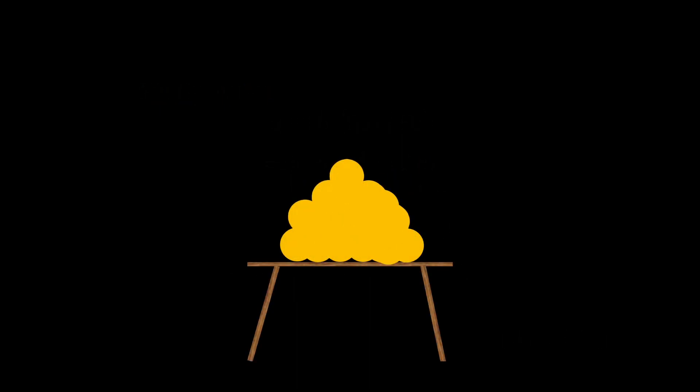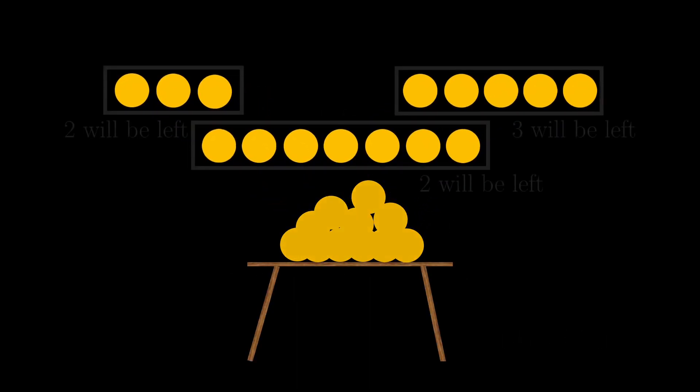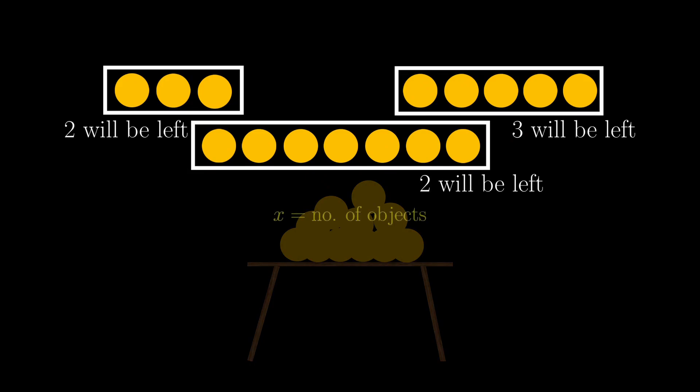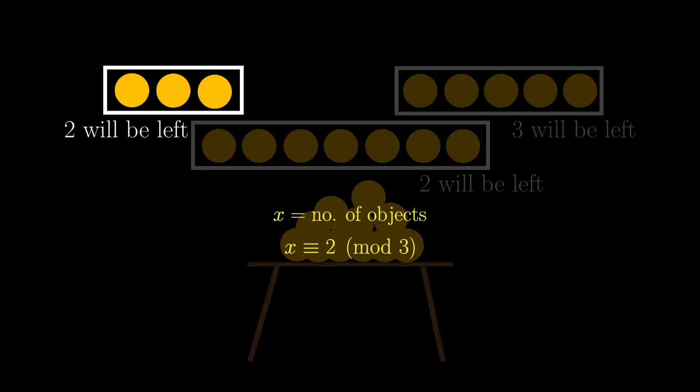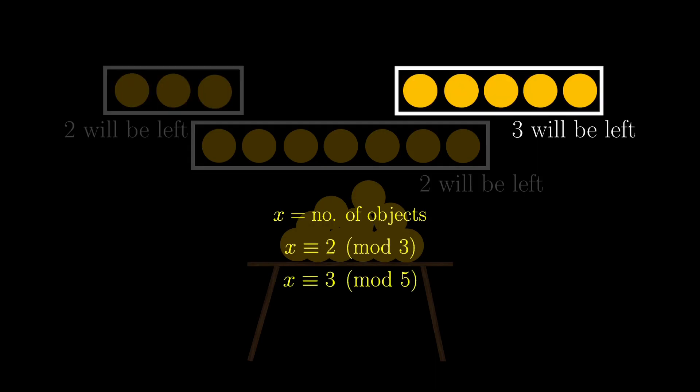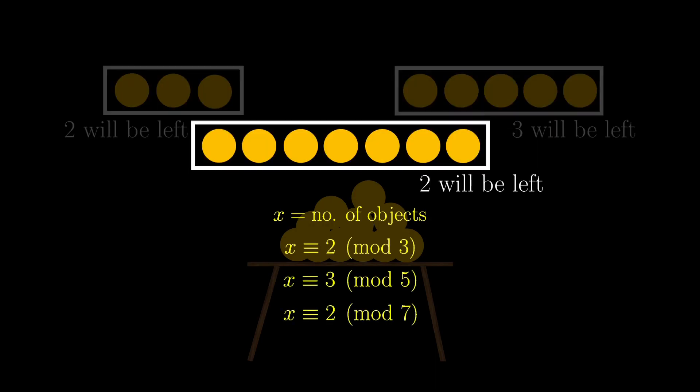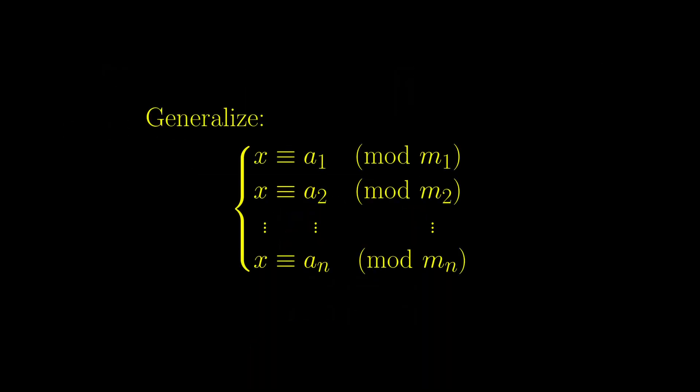The original problem has not left us yet. Using this notation, if we write x as the number of objects, then x is congruent to 2 modulo 3, 3 modulo 5, and 2 modulo 7. If we want to generalize this problem, we would have this system of equations.